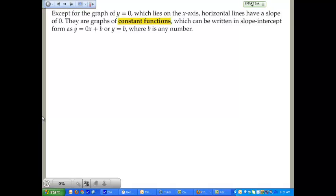They're graphs, horizontal lines. They're graphs of constant functions, which could be written in slope-intercept form, such as y equals 0x plus b, or just y equals b, where b represents any number. A constant function is a linear function in the form of y equals b. If you think about it, y equals 0x plus b, 0 times x is 0. So this means the same thing as that. It is a constant function.